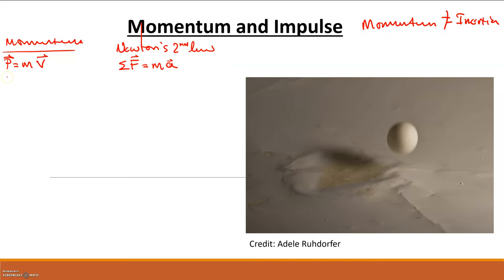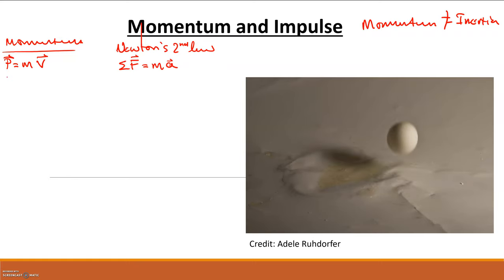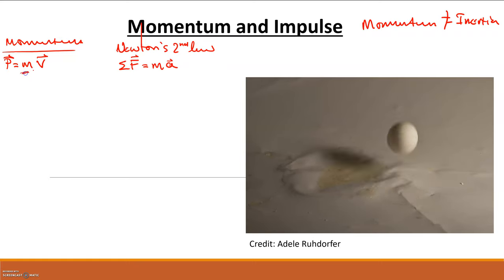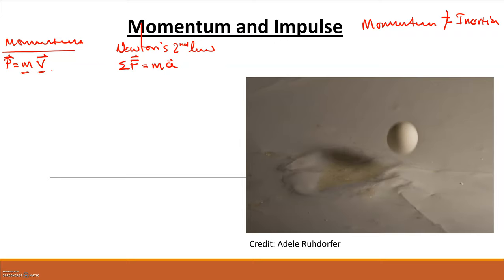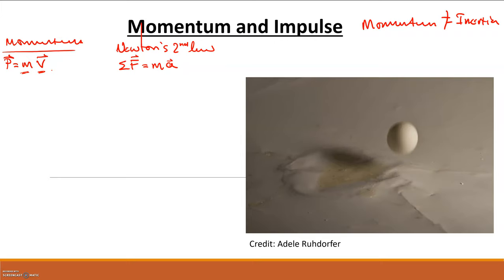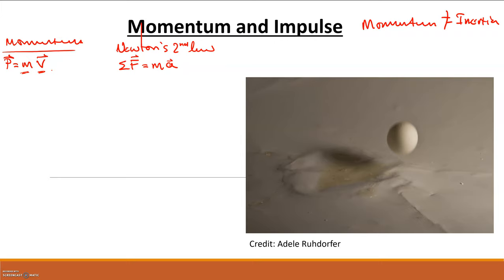Momentum is essentially how much motion a mass has, in a sense. We typically have a constant mass moving at some velocity, and that mass coupled with that motion gives rise to this idea of momentum.